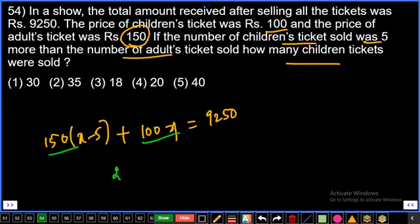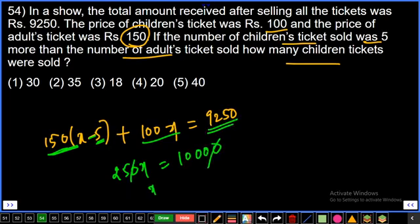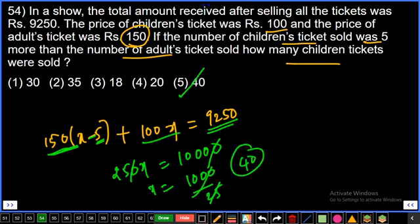100x + 150(x − 5) = 9250. So 250x − 750 = 9250, giving 250x = 10000, so x = 1000/25 = 40. Fifth option, final answer.